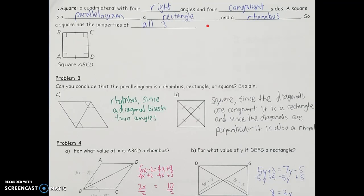Now adding squares to the two types we've already seen. A square is a quadrilateral with four right angles and four congruent sides, making it a parallelogram, a rectangle, and a rhombus — so it has all the properties of all three figures. For the classification problems: in part A, it's only a rhombus because the diagonal bisects opposite angles. In part B, it's a square because the perpendicular diagonals indicate a rhombus, and since every segment is marked congruent the diagonals are equal in length, making it also a rectangle — and a rhombus plus rectangle equals a square.